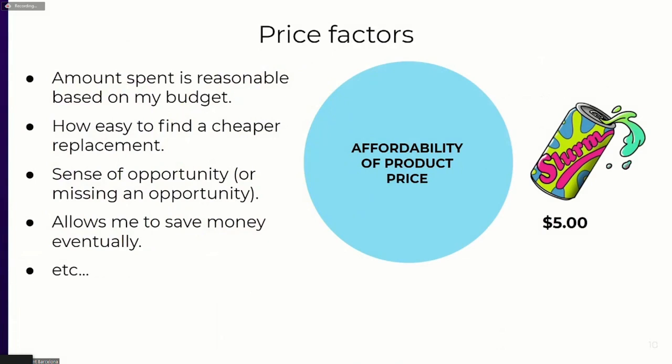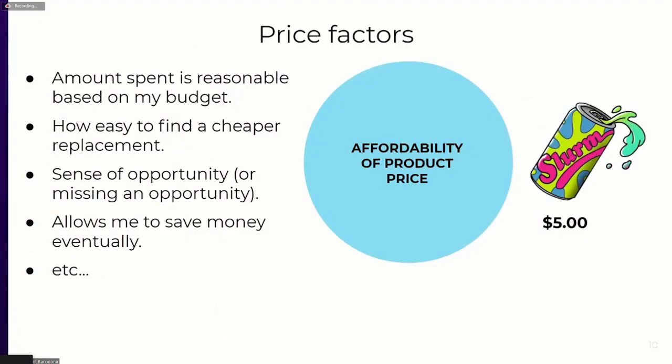On the topic of desire, there are several factors: how much does the customer want the game, how much fun is it, how much will the item increase that fun, and so on. On the topic of price, factors include how easy it is to find a cheaper replacement, the sense of opportunity, and most importantly, the actual price of the item. If the price is small, affordability will be very large, intersecting with smaller desire bubbles. If the price is very high, the affordability bubble shrinks and only those with a strong desire will buy.